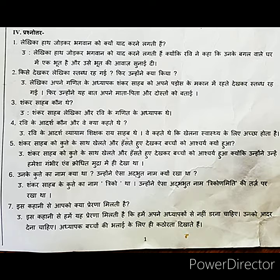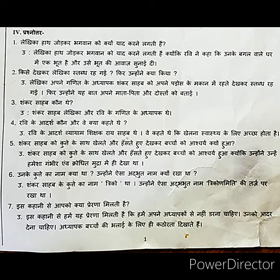Third question: Shankar sahab koan te? Who was Shankar sir? Answer: Shankar sahab lehkika aur Ravi ke ganit ke adhyapak te. So Shankar sir was the writer's and Ravi's math teacher. Ganit means Math; adhyapak means Teacher.